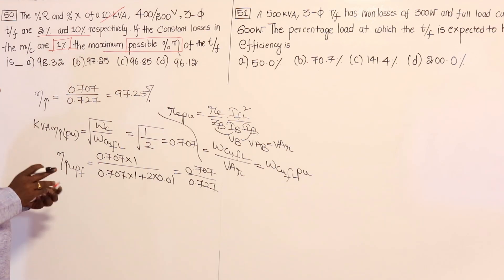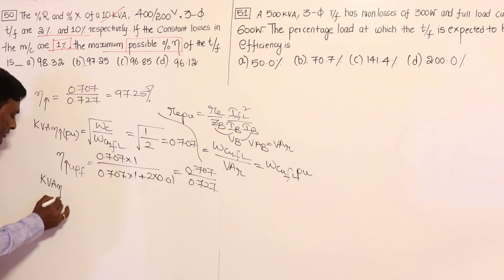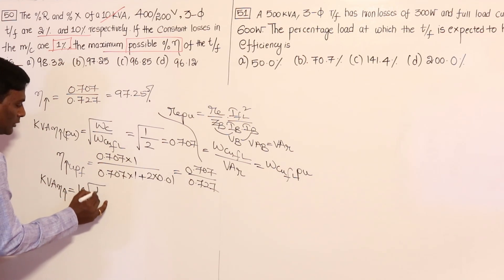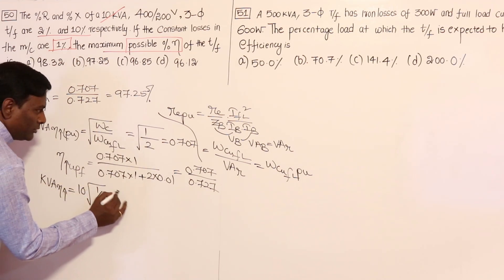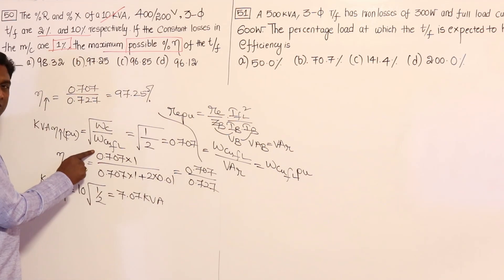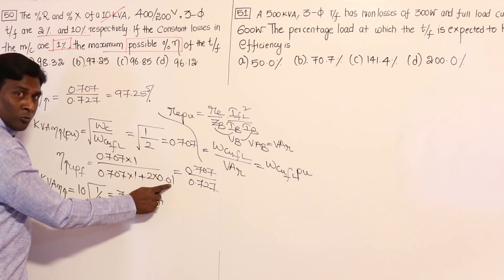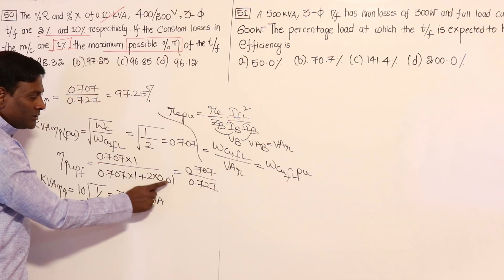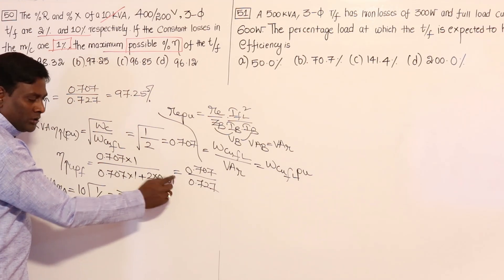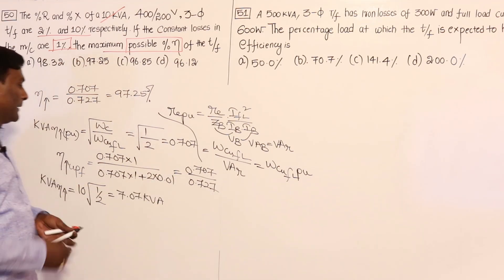For B.Tech students who are not comfortable with per units, KVA at maximum efficiency equals KVA rated, which is 10, times the square root of 1 divided by 2, giving 7.07 KVA. Using 7.07 KVA and two times one percent of 10 KVA as core loss, the answer comes out the same: 97.25 percent.